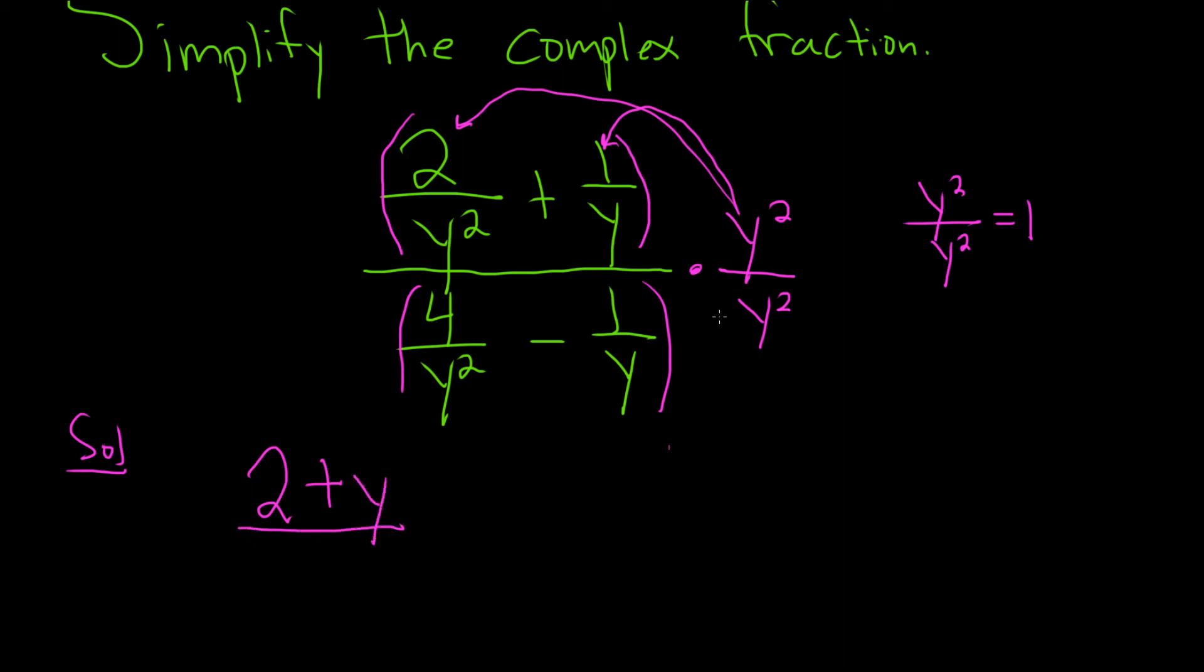Over. On the bottom, it'll be y squared times 4 over y squared. So the y squareds will cancel, and we're left with 4. And then minus y squared times negative 1 over y. So one of the y's will cancel, and we're left with y.